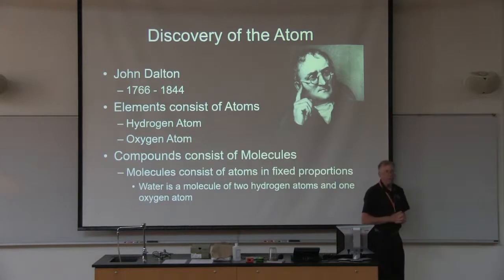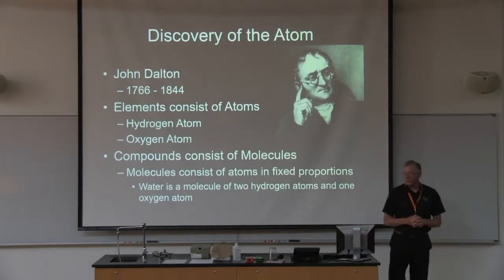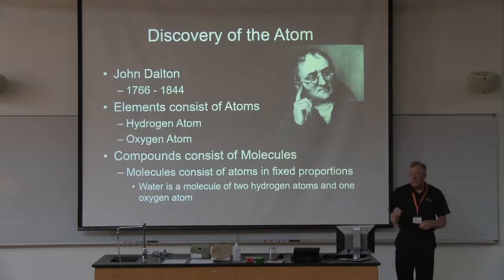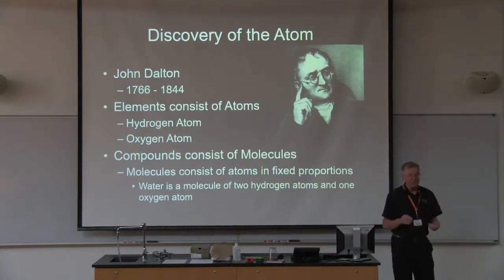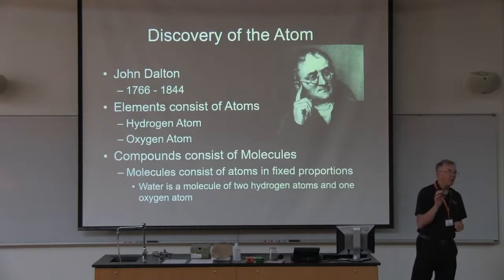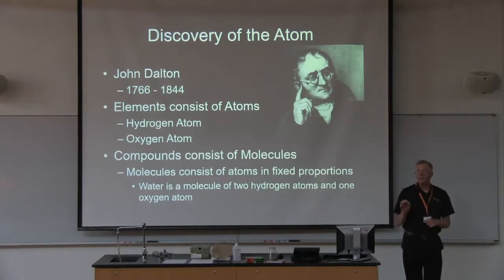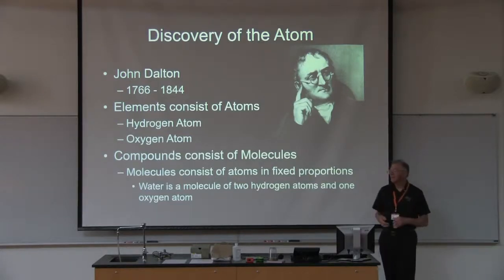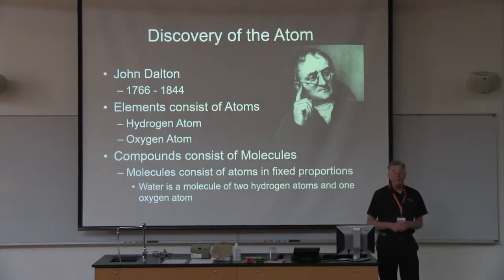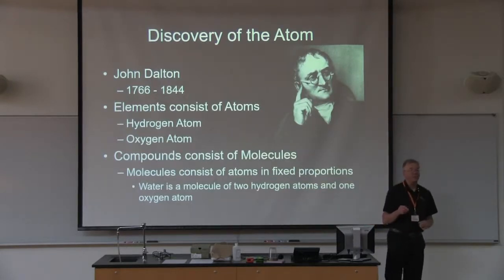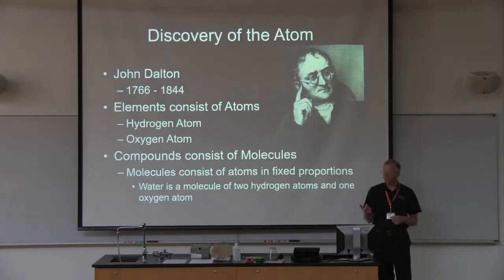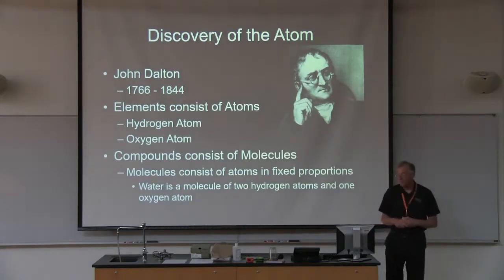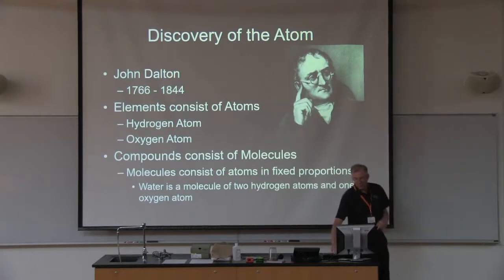It takes 2,000 years before another chemist, John Dalton, comes up with a better concept of the atom. What he realized — through chemistry — is that atoms are the smallest particles of elements, but elements combine in fixed proportions to form molecules. This becomes the model for the atom we have today. You could discover elements and figure out whether a compound was truly a compound or an element. We have to thank John Dalton for this breakthrough.